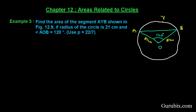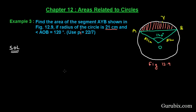Welcome friends! Let us solve Example 3 of Chapter 12. The example says: find the area of segment AYB, shown in figure 12.9. The radius of the circle is given as 21 cm, the angle AOB is given as 120 degrees. Use Pi equals 22 over 7. This is a very important question. Let us solve it.